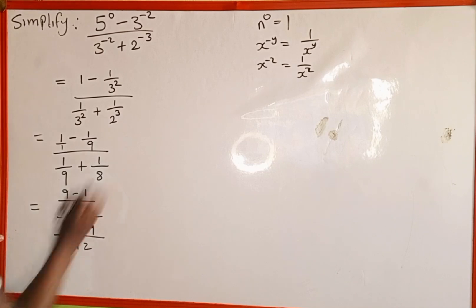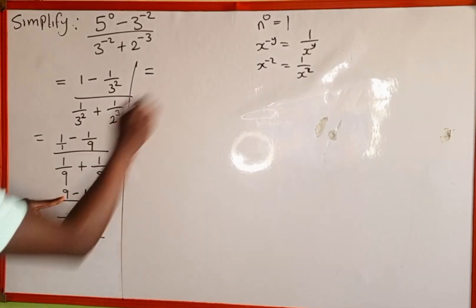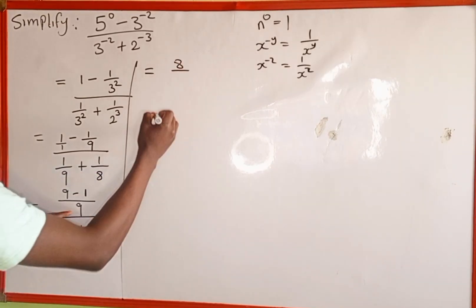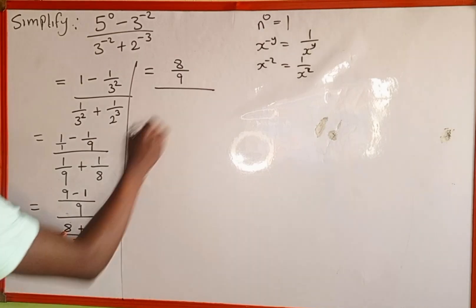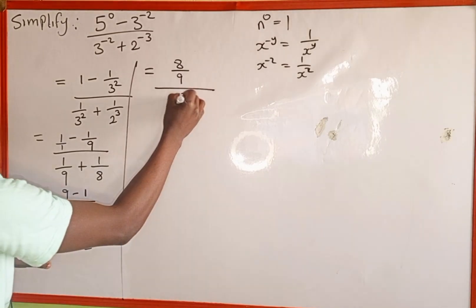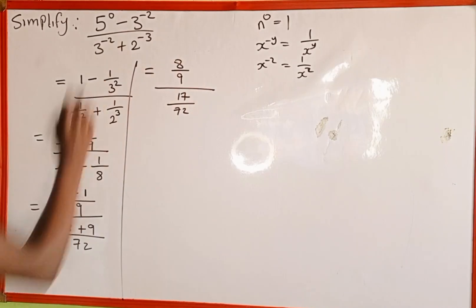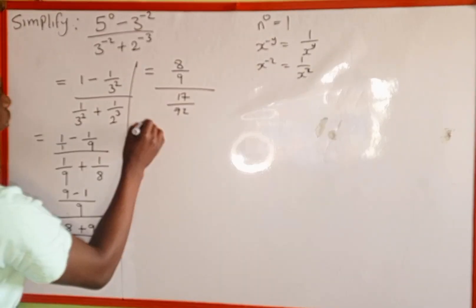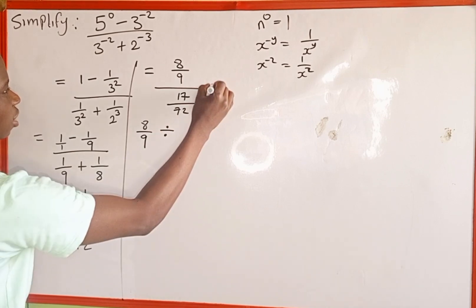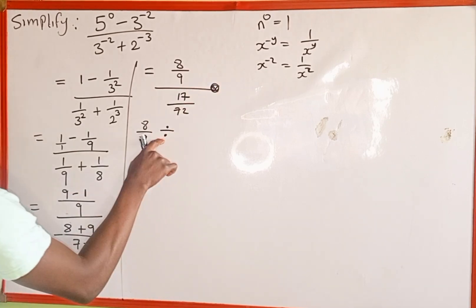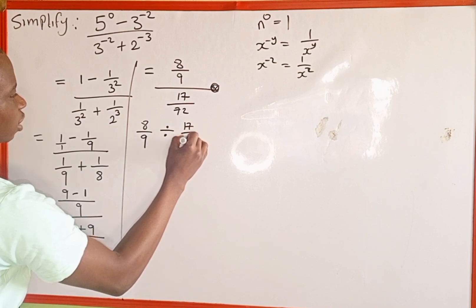So this is going to be equal to: 9 minus 1 gives us 8 over 9 in the numerator. Then everything divided by 8 plus 9 gives us 17 over 72 in the denominator. The whole expression can be written as 8 over 9 divided by 17 over 72.